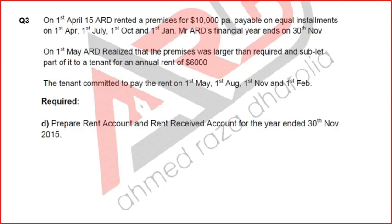For every three months — every quarter — we pay rent of £2,500. This is quarterly because in a year there are 12 months and we pay rent four times. Dividing 12 months by 4 gives a duration of three months per payment.